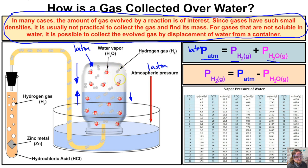To find the water vapor pressure, we refer to a vapor pressure table. If the reaction is taking place at 25°C, the table shows a water vapor pressure of 23.8 mmHg, which equals 0.0313 atmospheres. Since we know the total pressure and the water vapor pressure, we subtract to get the pressure of the hydrogen gas: P(H2) = P_total − P(H2O).